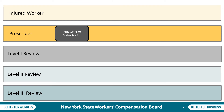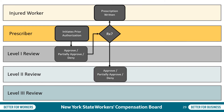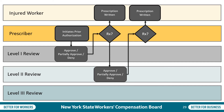When a PAR gets submitted by a provider, the system will automatically route it to the correct location, removing the need for a fax number. PARs will follow the same levels, starting with the prior authorization being initiated with the prescriber. Then the Level 1 reviewer will approve, partially approve, or deny. It will go back to the prescriber for review and either be approved for injured worker treatment or continue through to Level 2 for approval, partial approval, or denial. Again, it will go back to the prescriber to either move on to injured worker treatment or a Level 3 review.